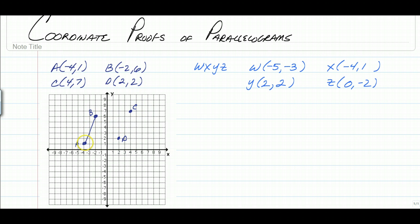Now to prove whether or not this figure is a parallelogram, what you need to do is calculate the slope of all four sides. Because remember, the definition of a parallelogram means it has two pairs of opposite sides that are parallel. To do that on a coordinate plane, all we need is to find the slope.